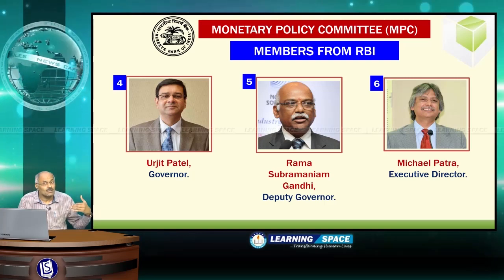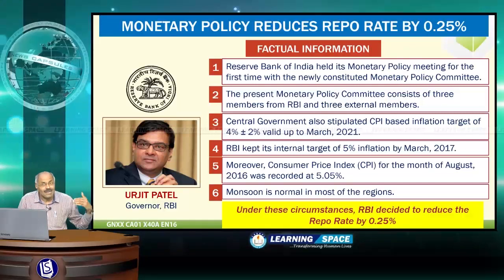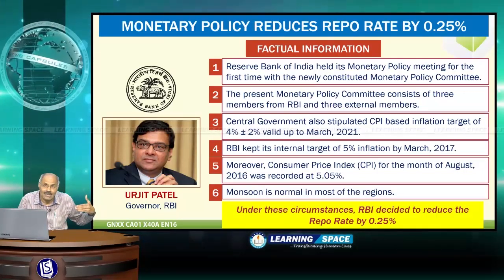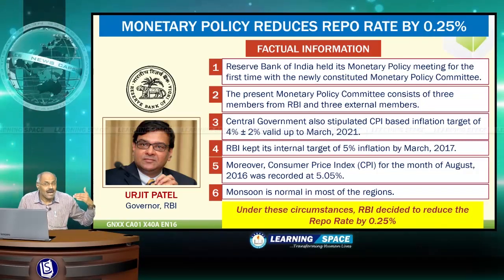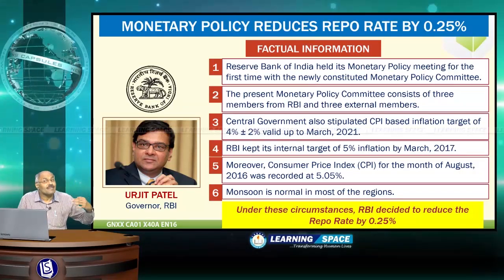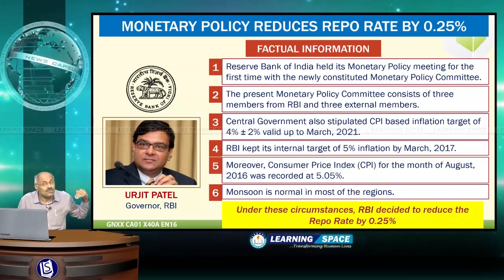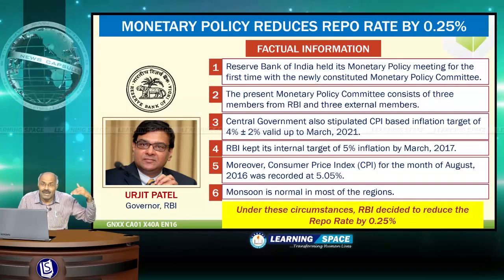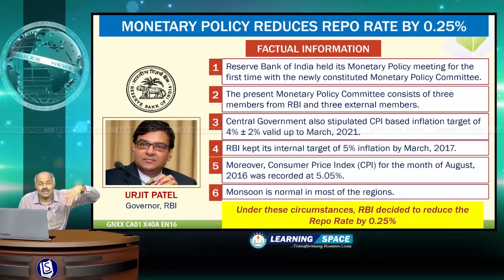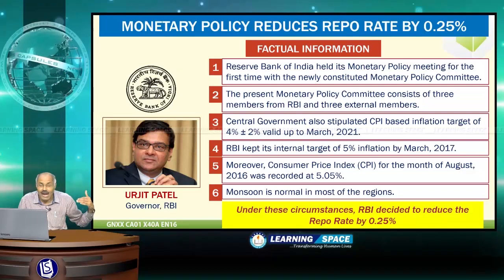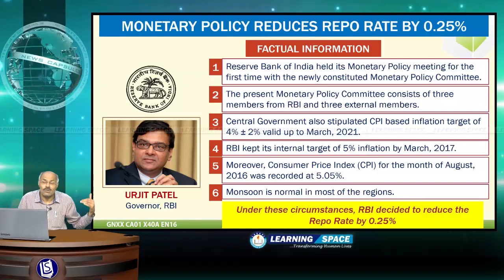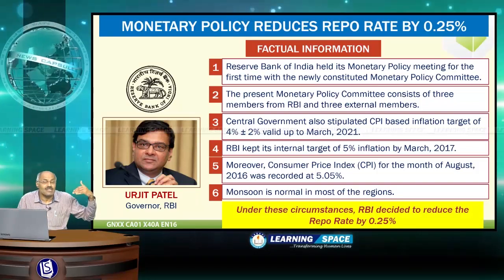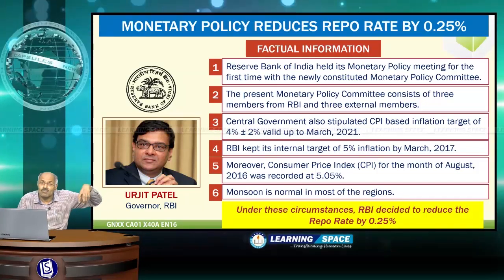These 6 members constitute the monetary policy committee, and this 6-member committee has recently announced the first monetary policy — the first time the policy was announced after the constitution of this committee. Two things are very important: RBI kept its internal target of 5% inflation by March 2017. Figures for August 2016 show CPI-based inflation at around 5.05%, and for September 2016 it further reduced to below 5%. At the same time, the central government stipulated a CPI-based inflation target of 4% plus or minus 2%, valid up to March 2021.